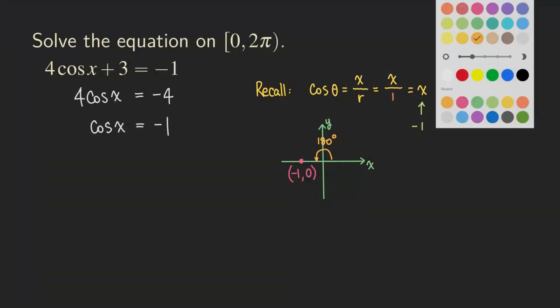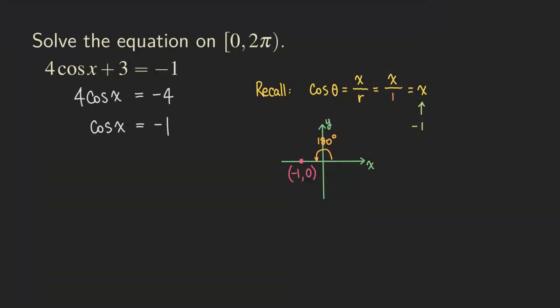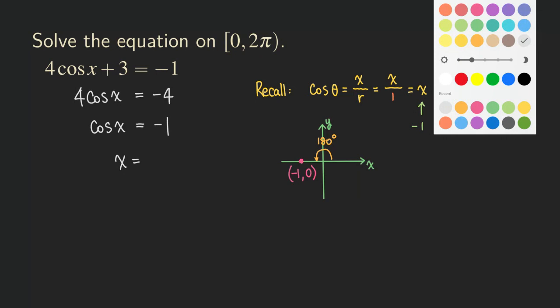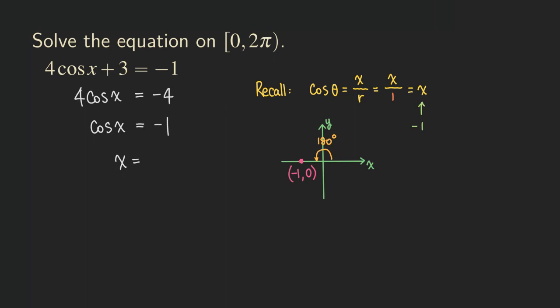That means there's only one solution for this angle. So 180 degrees is this angle. Our solution on this interval is x equals 180 degrees. As suggested in this interval, we're going to write the answer in radians, so the answer is π. That's the only solution to this equation on this interval.